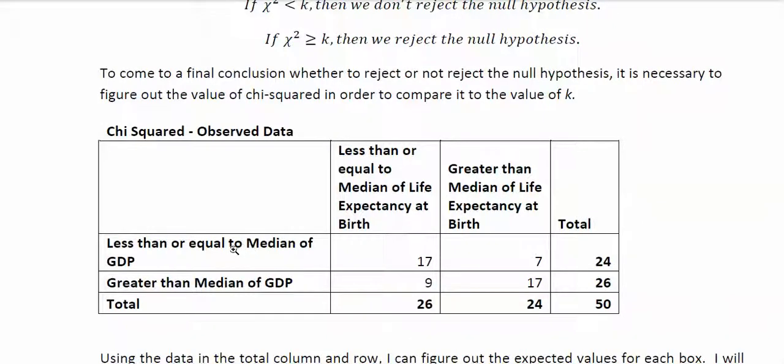And then he's used the median for the GDP to split it horizontally this way, so anything that is less than or equal to the median goes in the top half. Anything that is greater than the median goes in the bottom half.